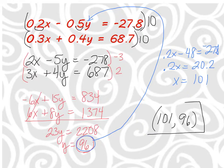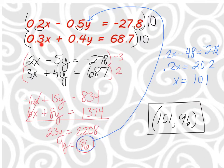That's the point where the two lines intersect — the x and y value that makes both original equations true. A shortcut: instead of doing this in two stages, you could have taken the top equation times negative 30 and the bottom equation times 20, doing both the decimal-clearing and the elimination multiplier in one shot.